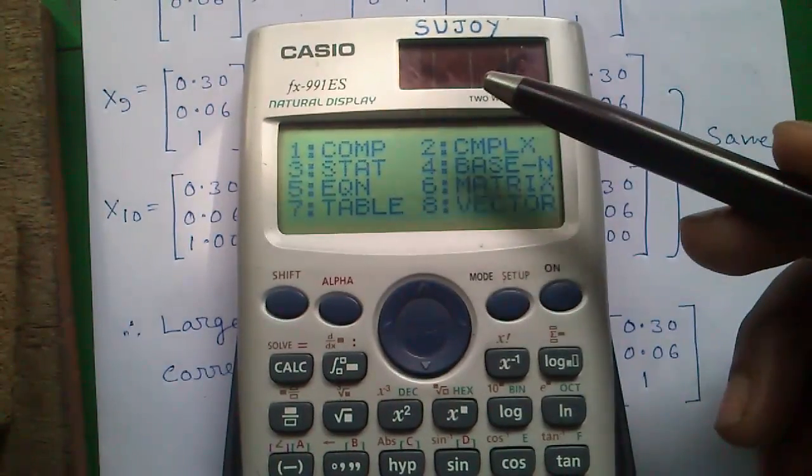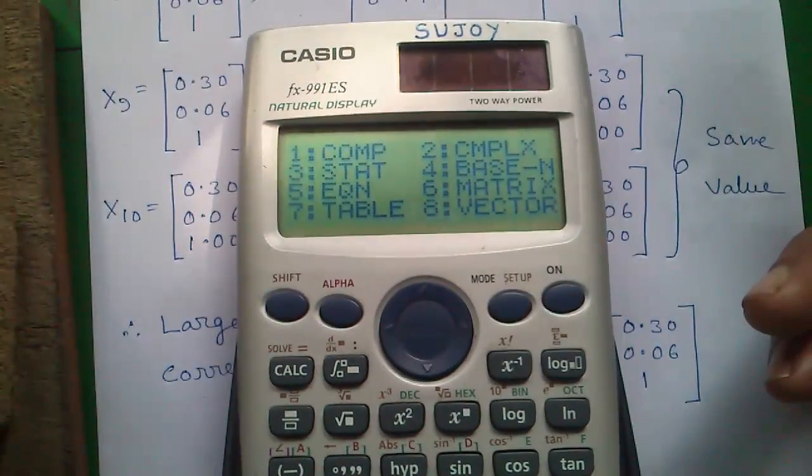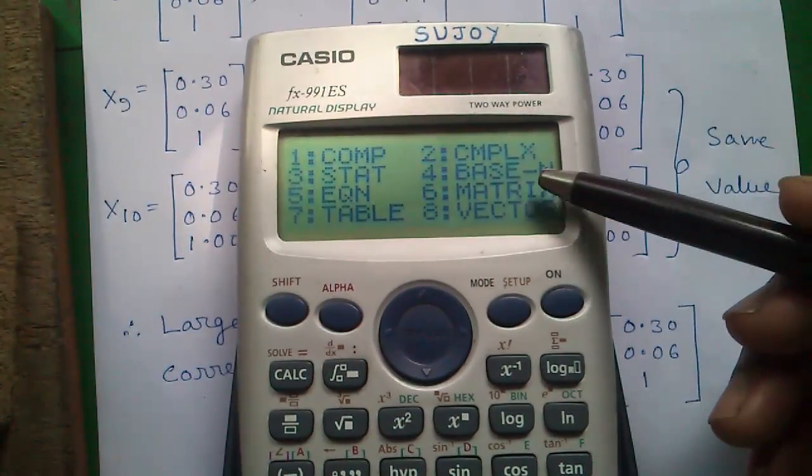In statistics mode, you can find out mean, median, mode, standard deviation, and correlation coefficient. And in number system mode, you can convert between binary, octal, hexadecimal and decimal.